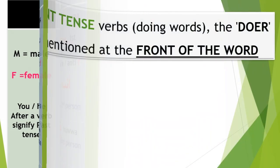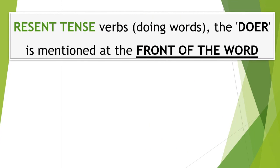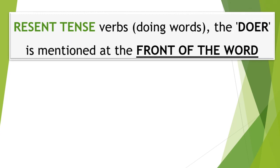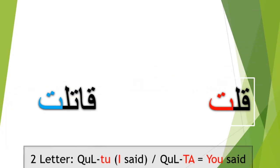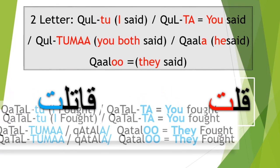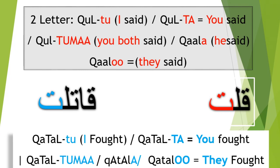Present tense verbs, also called doing words, have the door (marker) mentioned at the front of the word. If you practice this table on other two or three letter words it works most of the time. A good example for two-letter words: قلت — I said, قلت — You said, قال — He said, قالوا — They said. For three letters: قتلت — I fought, قتلت — You fought, قتلوا — They fought.